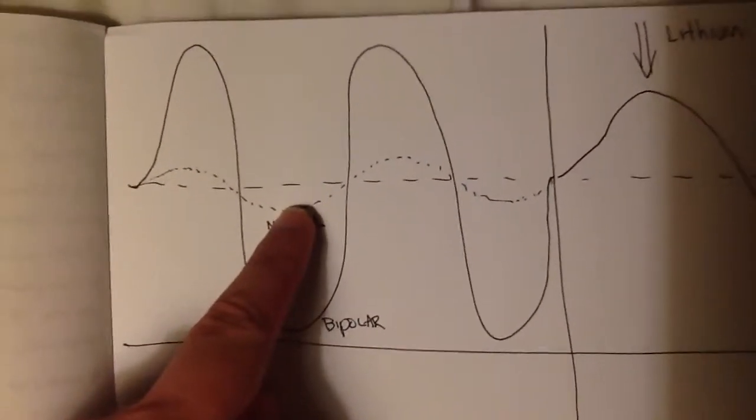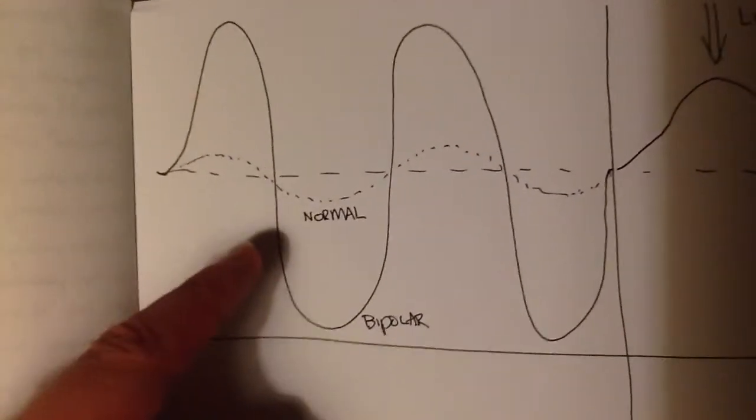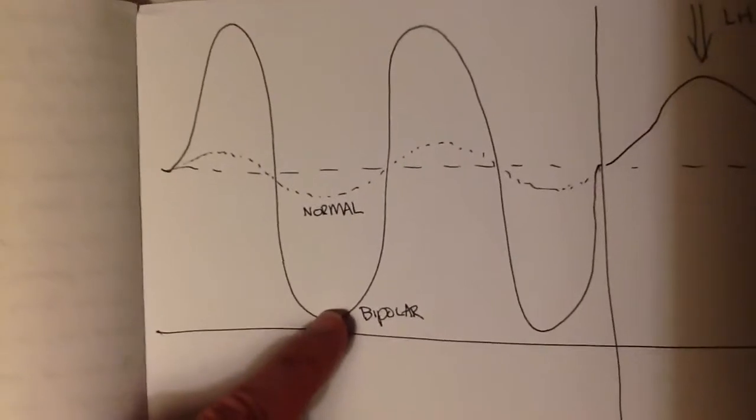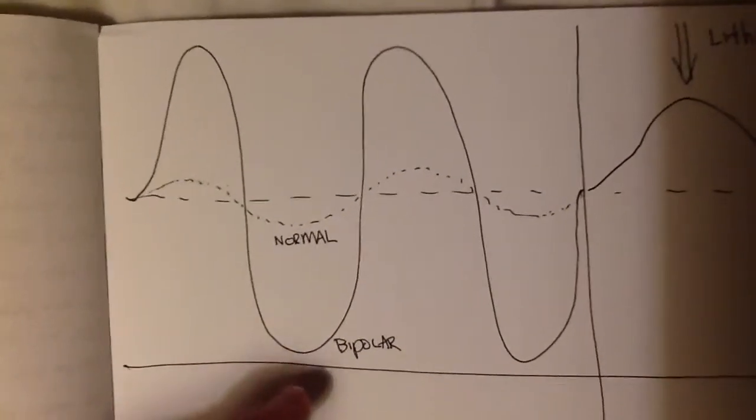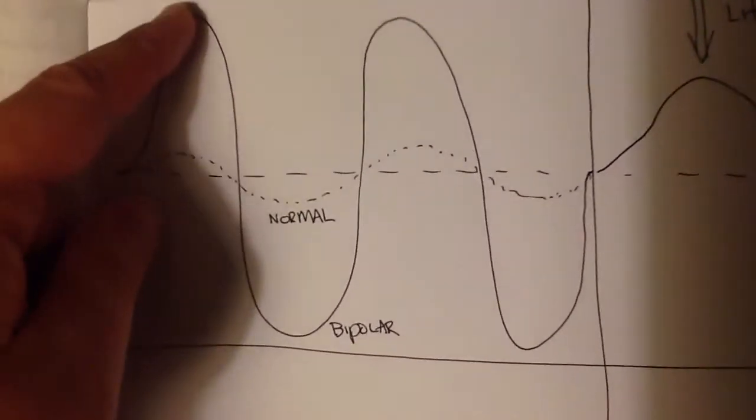A normal person doesn't, except with extenuating circumstances, reach that type of depression, but a bipolar person, without any reason, reaches the low lows of depression and the high highs of mania.